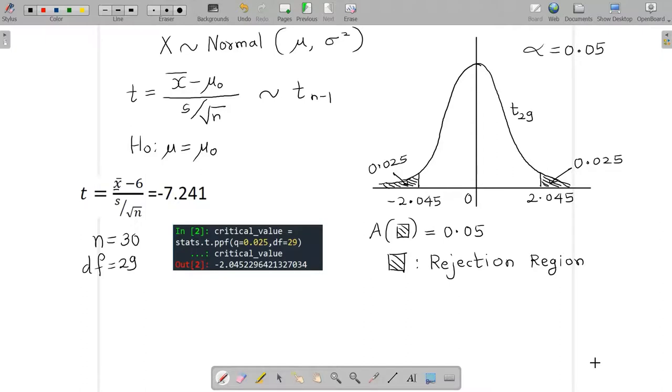So we give some particular limits to it, and those limits are critical limits. We have given those limits at the 0.05 level of significance as minus 2.045 and a positive counterpart.